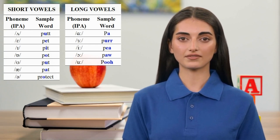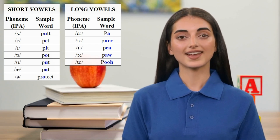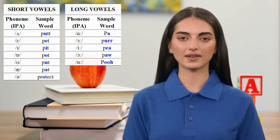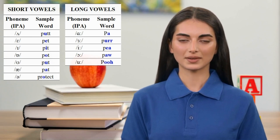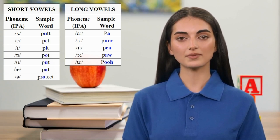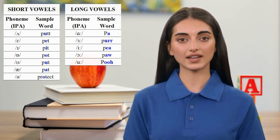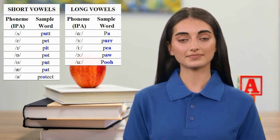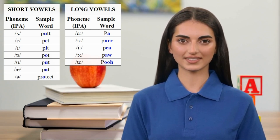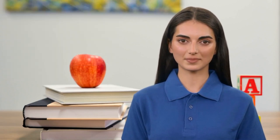The five long vowels in RP can be heard in these words: pa, pur, pee, paw, poo. Although for British speakers, the vowels in pa, pot, and paw are distinct and separate phonemes, virtually all American speakers merge at least the first two if not all three into a single phoneme. The sound of the O in protect is called schwa, the generic and nondescript vowel that very commonly occurs in unstressed syllables.